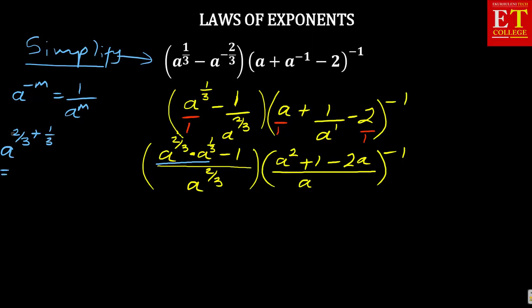So 2 over 3 plus 1 over 3 is same as a to the power 3 over 3, which is same as a to the power 1. In this case, we are going to be having a to the power 1, which is a minus 1, over a to the power 2 over 3.